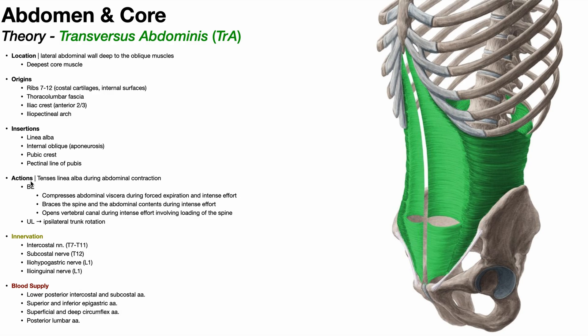Coming back to the actions of the transversus abdominus, beyond bracing the spine during intense effort, it also helps to keep the vertebral canal open during that effort — ensuring the canal doesn't collapse inward or that structures like the ligamentum flavum impinge on the spinal cord or, further down, the cauda equina. So how does that work?